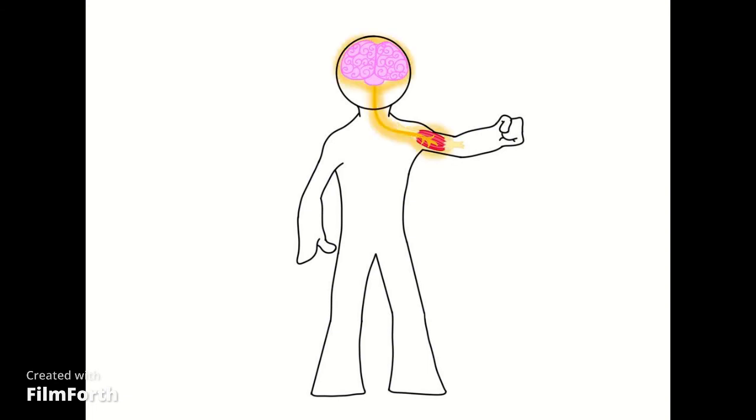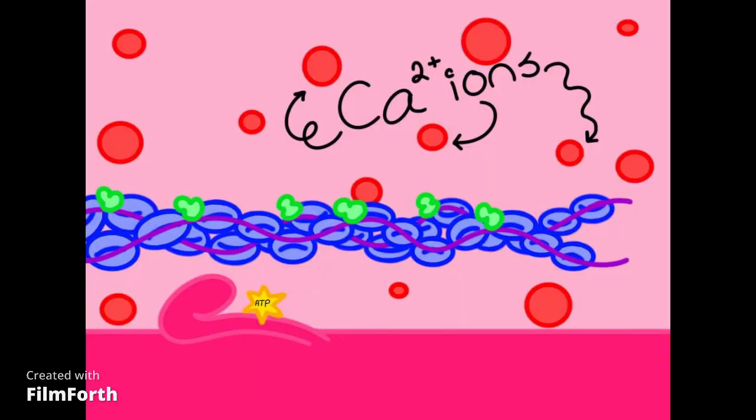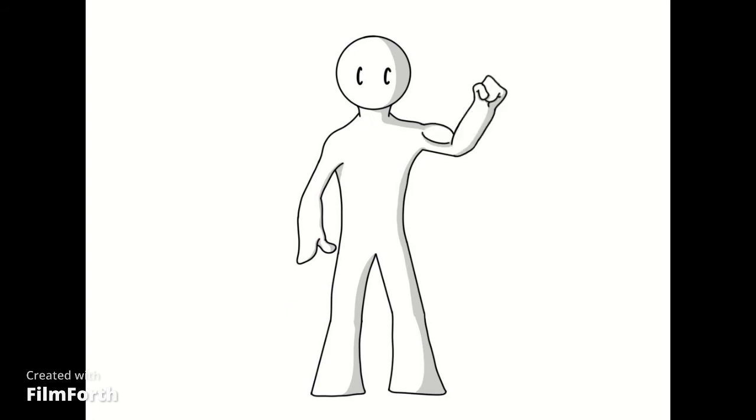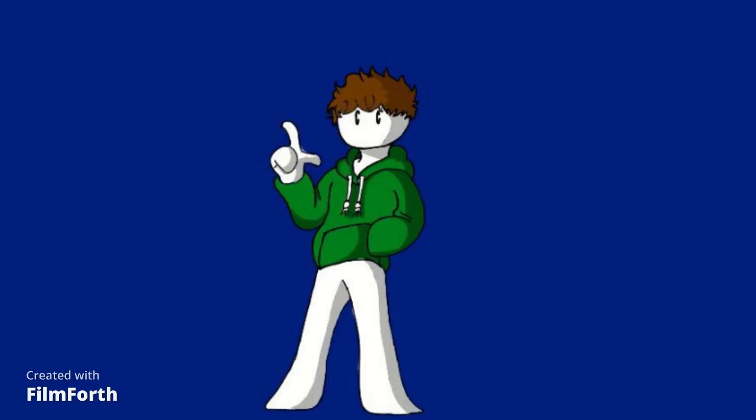To summarize, our brain sends a signal to our muscle, which releases calcium ions that allow the sarcomere to constrict and make your arm go from this to this. And that is the sliding filament model.